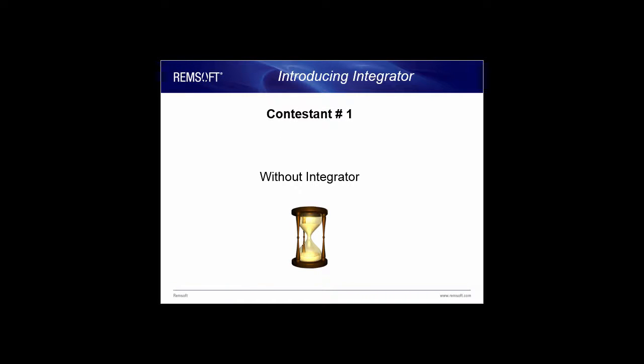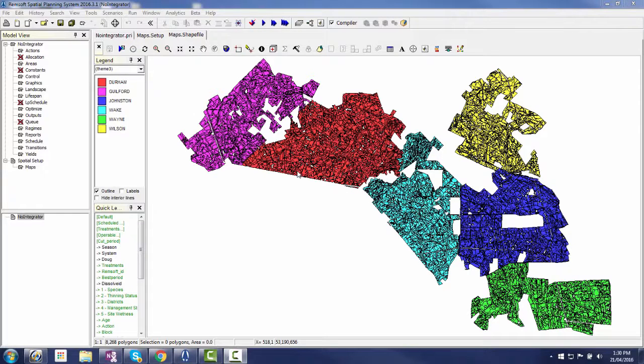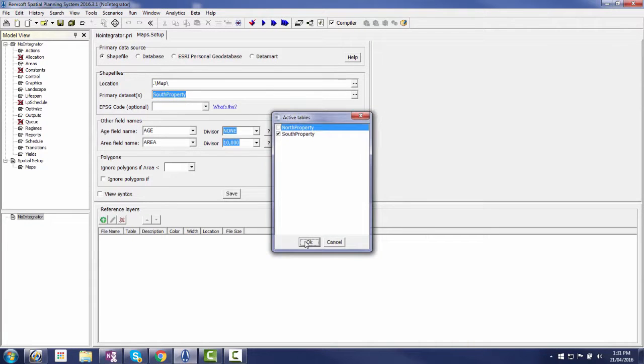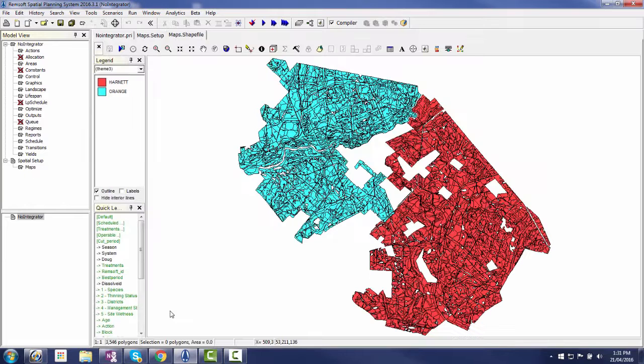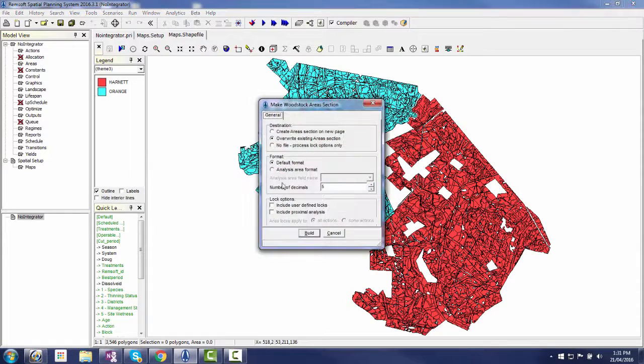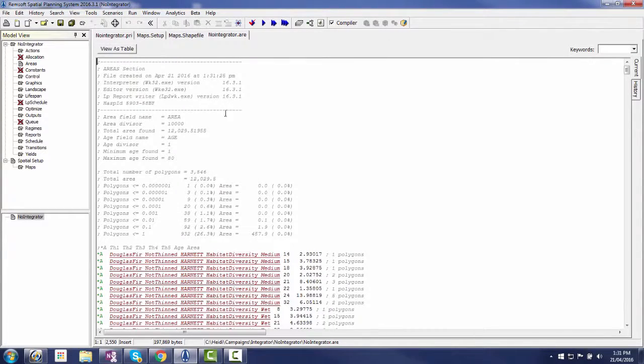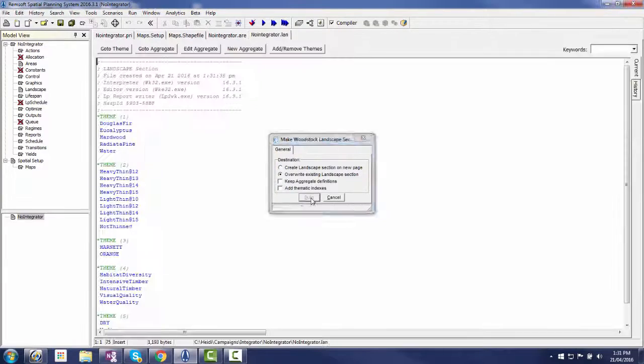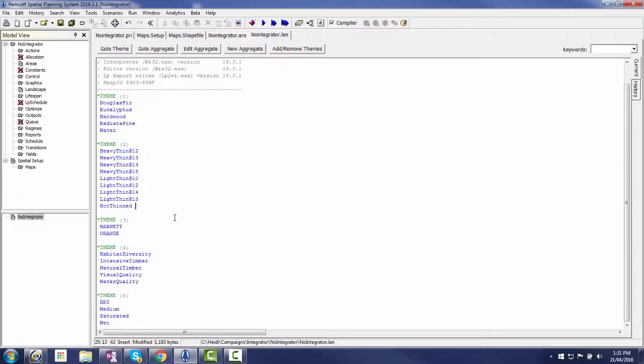Here is the map of the north property that was used in the original model. Hugo starts with the spatial setup and switches off the north property shapefile and onto the newly acquired south property shapefile. As you can see, the south property is broken into two management districts. Hugo builds the new area section from the shapefile. Then repeats the task to build the landscape section.